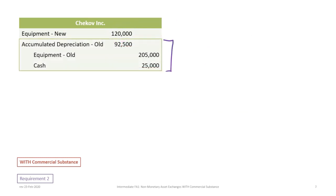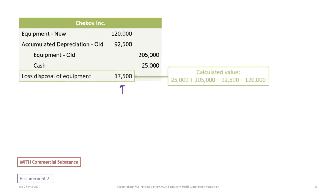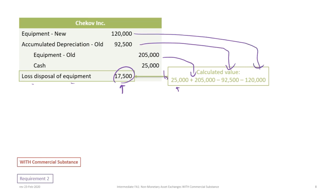The remaining line items in Chekhov's journal entry are the same as before: credit equipment for $205,000, debit accumulated depreciation for $92,500, and credit cash for $25,000 since Chekhov is paying Sulu. To balance the entry, we record a loss on disposal of $17,500, calculated as $25,000 cash plus $205,000 equipment cost less $92,500 accumulated depreciation less $120,000 for the new equipment.